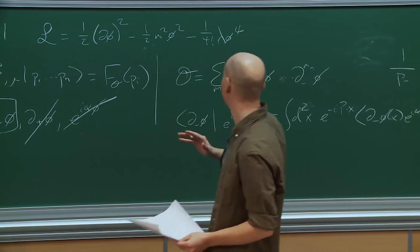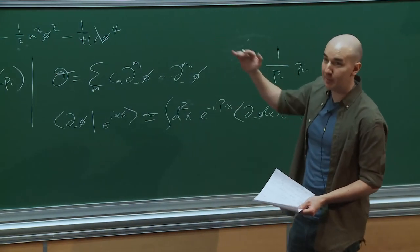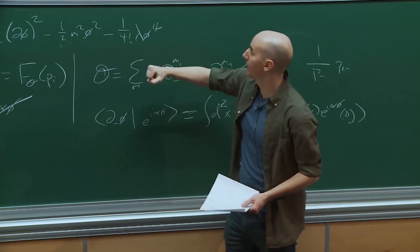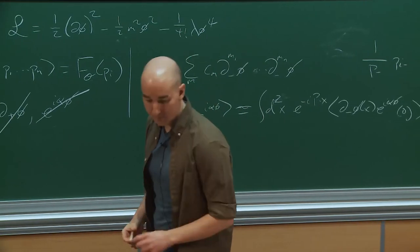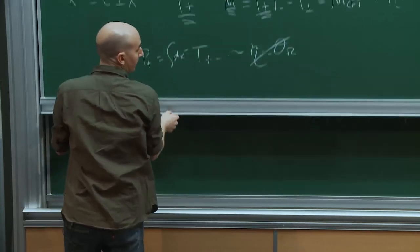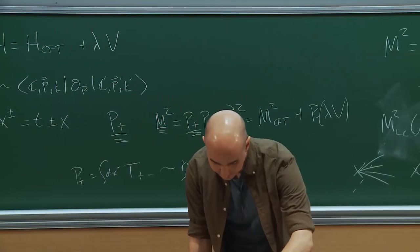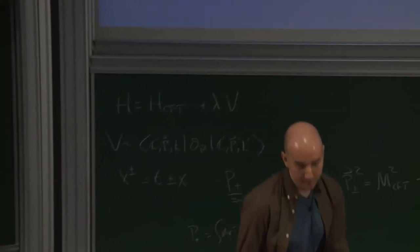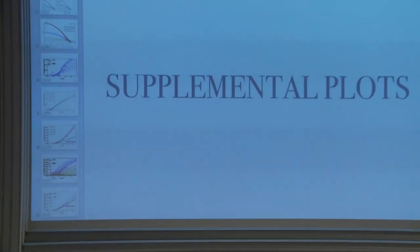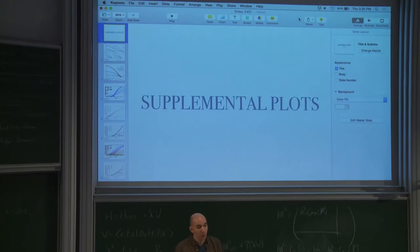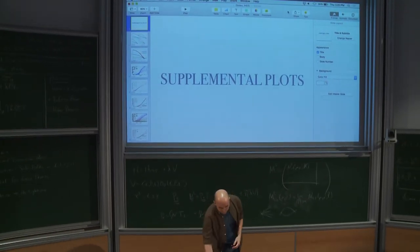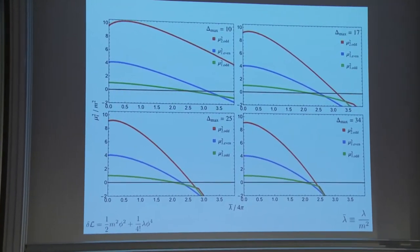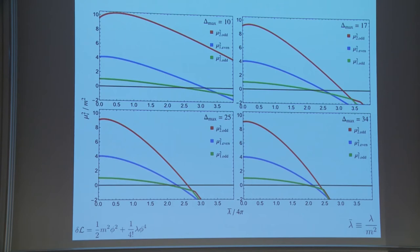By using CFT tricks, we're able to go to much higher delta max than we could otherwise. Using the CFT structure is a huge advantage at the operational level of constructing the basis — once we actually exploited it, things became much more efficient. So you construct the truncated Hamiltonian, then diagonalize it, and look at the resulting eigenvalues.